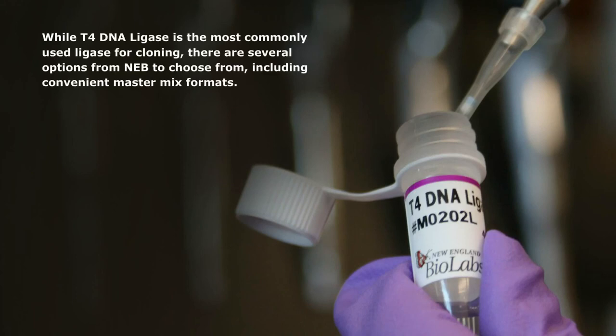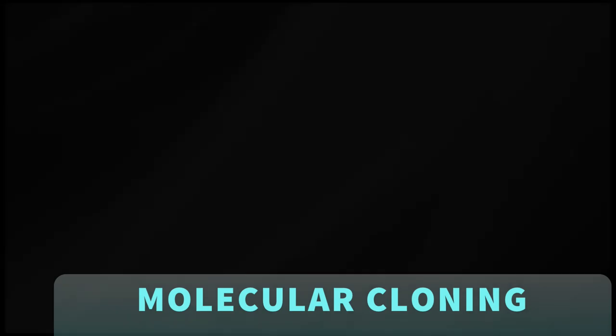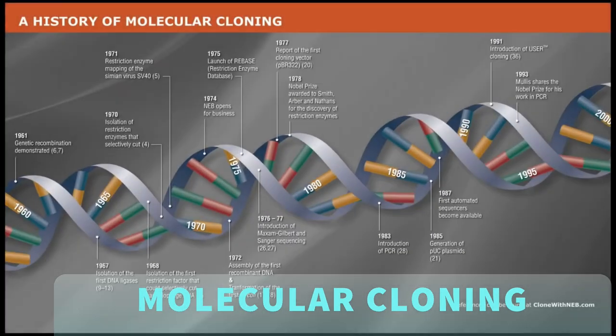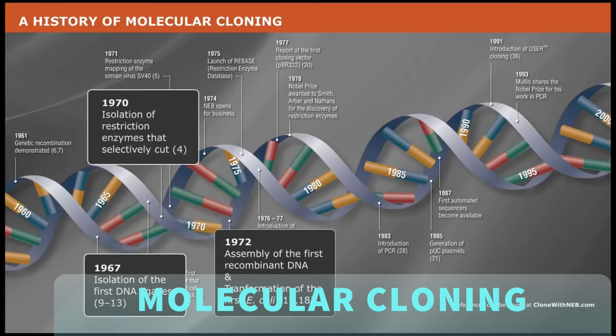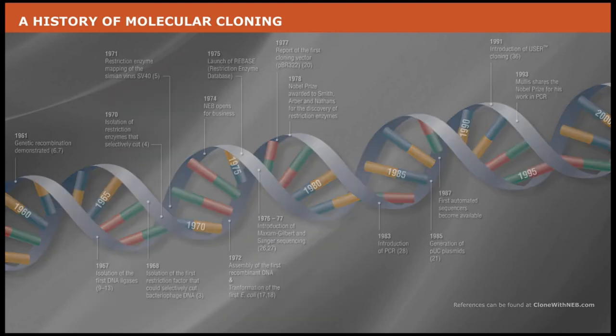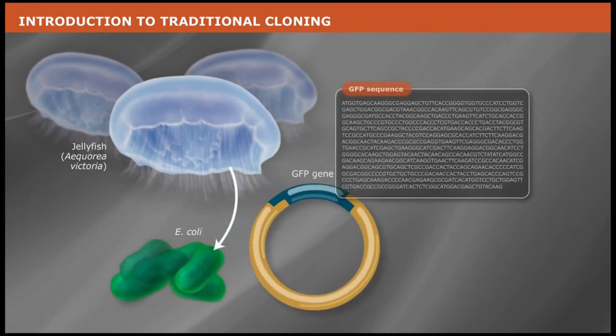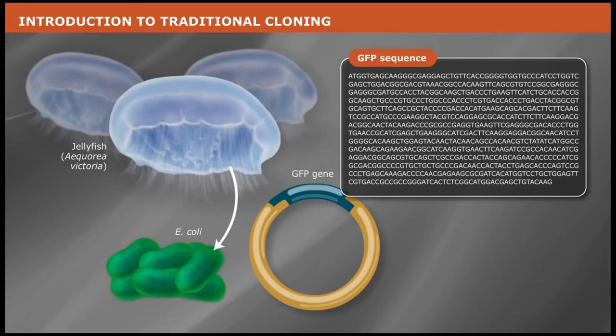While T4-DNA ligase is the most commonly used ligase for cloning, additional cloning evolved from the discoveries of site-specific nucleases and DNA ligases in the 1970s to enable the era of molecular cloning. At the beginning, cloning a gene into a plasmid allowed the host organism to replicate the cloned sequence, and this procedure fueled the early gene sequencing, protein expression, and gene function studies.